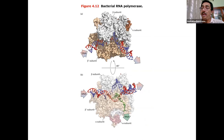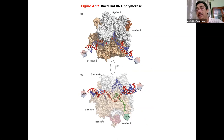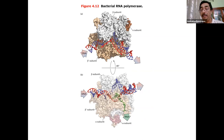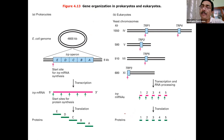Let us first learn transcription in prokaryotes superficially before going into eukaryotes in depth. The bacterial RNA polymerase is a very large protein complex of five subunits: two alpha subunits, two beta subunits, and a sigma subunit. The sigma subunit is present only for initiating transcription; after promoter clearance it falls off. The elongating RNA polymerase does not carry the sigma subunit. The complex crawls on the DNA, introduces a kink, the DNA opens up, and RNA is synthesized and exits through a tunnel.